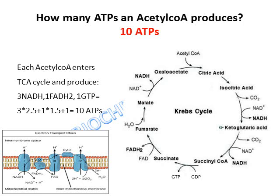Each acetyl-CoA entering the Krebs cycle (also known as the citric acid cycle or TCA cycle) produces 3 NADH, 1 FADH2, and 1 GTP (equivalent to 1 ATP). These enter the electron transport chain in the inner mitochondrial membrane. Each NADH yields 2.5 ATP and each FADH2 yields 1.5 ATP. Adding them up: 3×2.5 + 1×1.5 + 1 = 10 ATP per acetyl-CoA.